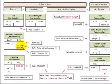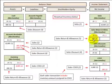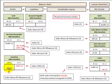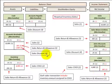Now let's say we have a sales return — a customer returns three hundred dollars. We credit accounts receivable for three hundred dollars and debit sales returns and allowances for three hundred dollars. We also have to account for it in the inventory account. The cost basis for the returned material was two hundred dollars, so we debit inventory to increase it by two hundred dollars and credit cost of goods sold to decrease it by two hundred dollars.